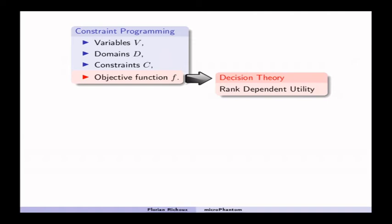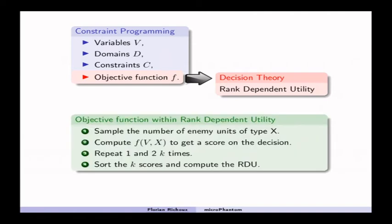And to be more specific, I use rank-dependent utility. So, here, in these four steps, of course, it's more complicated than that, but I just quickly show how did I combine, how did I use constraint programming, and to be more specific, how did I call the objective function of my model within the rank dependent utility computation.